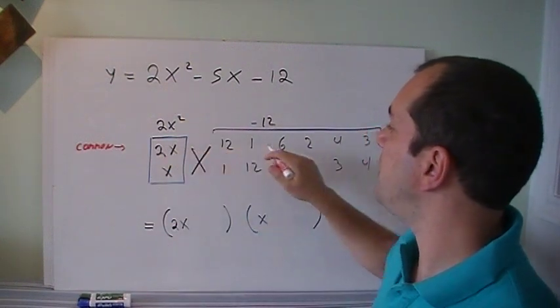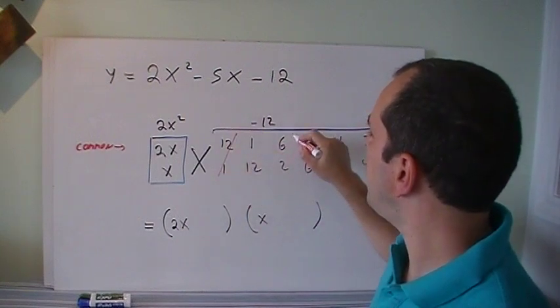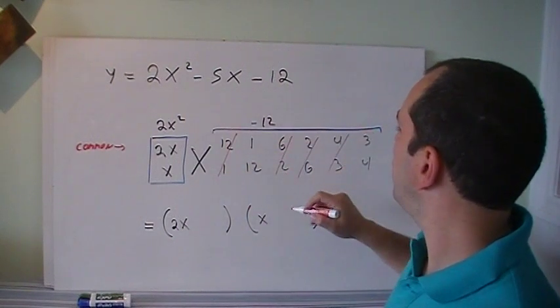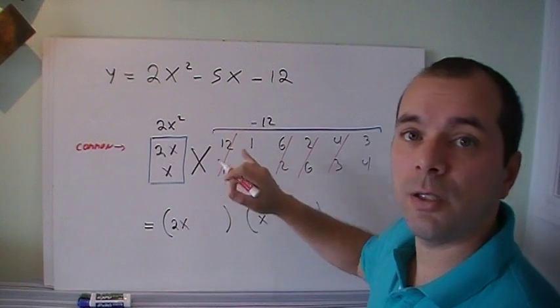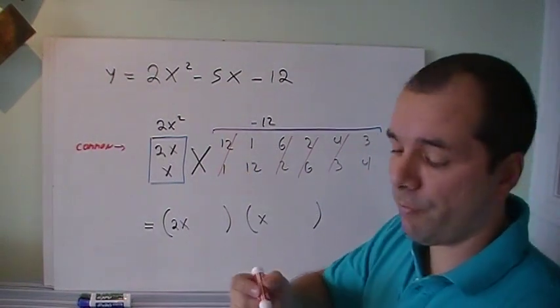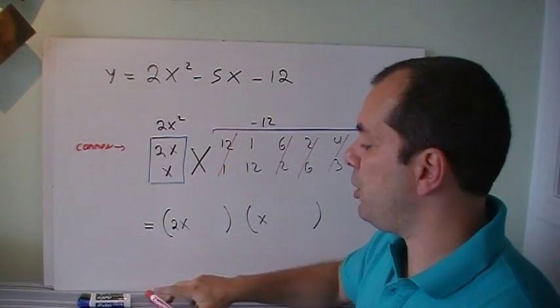So if I have common factor with 2 and something else, I don't need to try it. So the 6, the 2, the 4, so I really have two choices, the 1 and the 12, or the 3 and the 4 that will work out. And this is how we check.